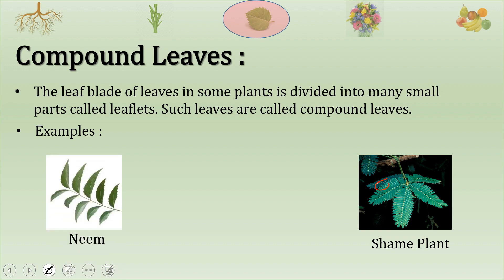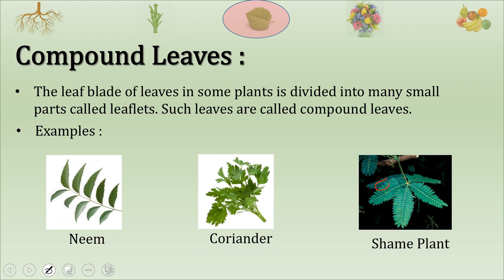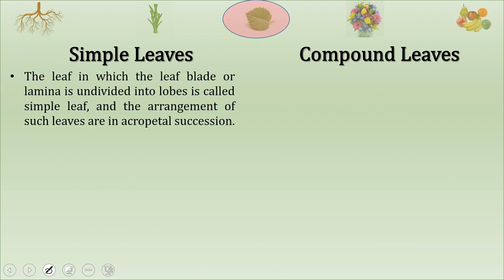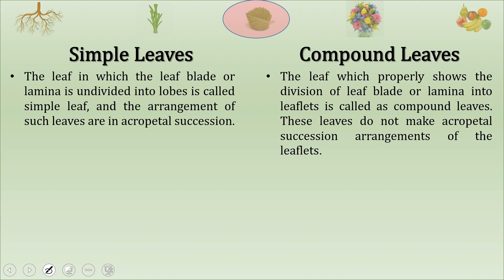More examples of compound leaves are leaves of neem and leaves of coriander. Now let us differentiate between simple and compound leaves. In a simple leaf, the leaf blade or lamina is undivided, and the arrangement of such leaves is in acropetal succession, meaning new or young leaves will be on top and old leaves will be at the bottom.